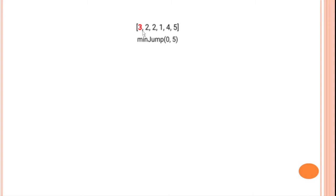In the example with array [3, 2, 2, 1, 4, 5], we call min_jump(0, 5). The locations are 0th through 5th, and end is 5. In this case we have 3 possibilities. Since a[0] equals 3, i ranges from 1 to 3. We call min_jump(1, 5), min_jump(2, 5), and min_jump(3, 5). From position 1 with value 2, there are 2 possibilities. From position 2, either jump to 1 or 4. From position 3, only one possibility to go to the next index.